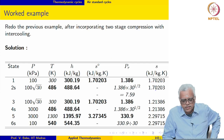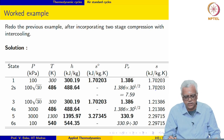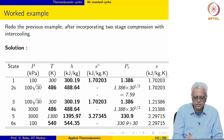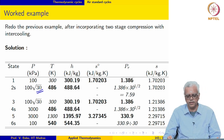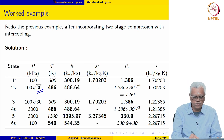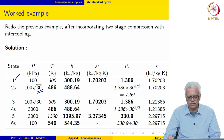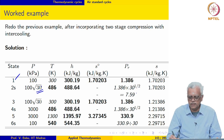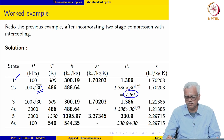Let us redo the previous example with 2-stage compression. The overall pressure ratio was 30, so the pressure ratio across each stage is the square root of 30. For state 2S, the pressure is now 100 times the square root of 30; correspondingly, the value for PR_2S is 7.59.